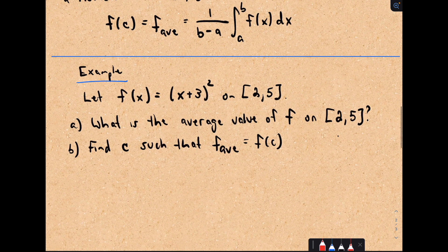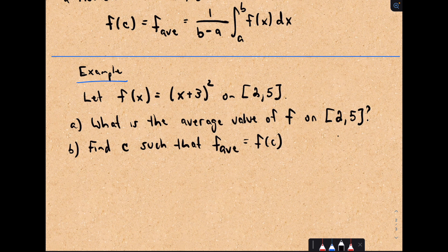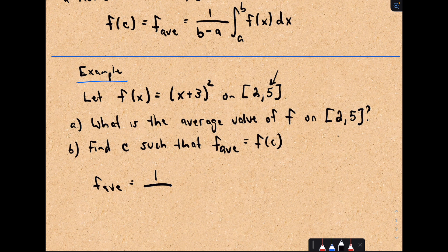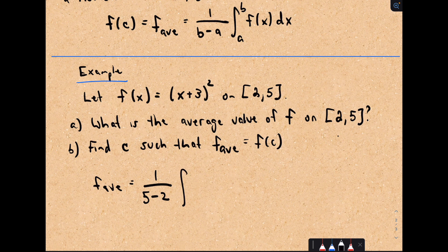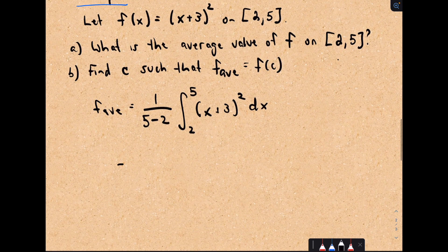Let's do a straightforward example. f of x equals x plus 3 quantity squared on 2 to 5. Let's find the average value. The average value is not too bad. We just take 1 over the length of the interval, so that's 5 minus 2. And then we're computing the definite integral from 2 to 5 of x plus 3 quantity squared dx.